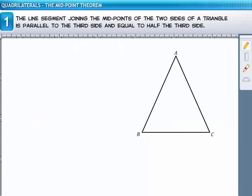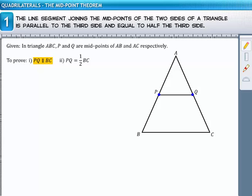Let ABC be the given triangle in which P and Q are midpoints of sides AB and AC respectively. We have to prove that line PQ is parallel to side BC and PQ is half of BC.